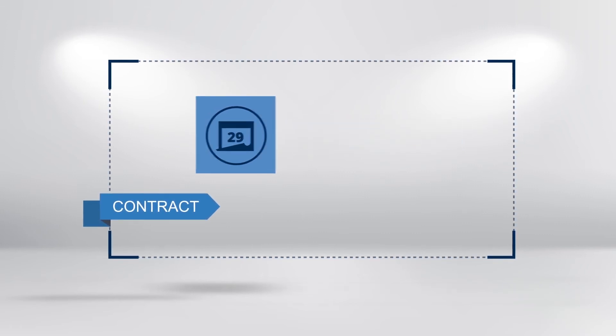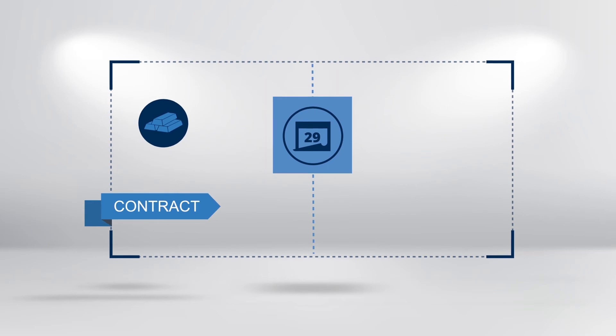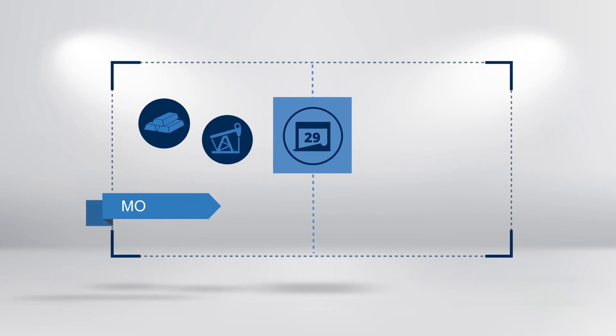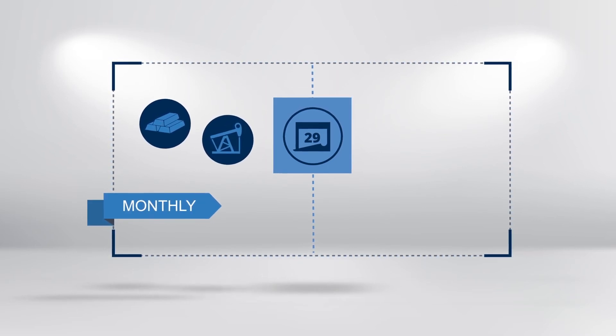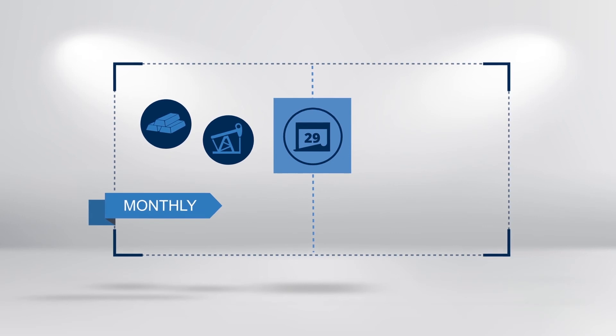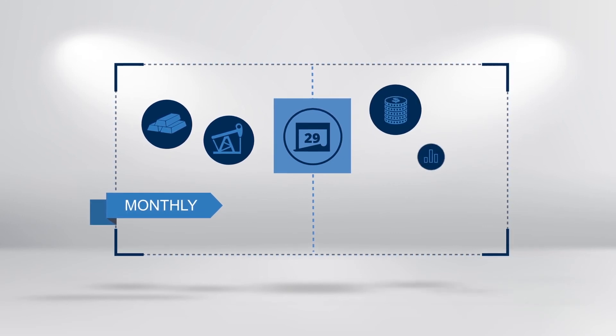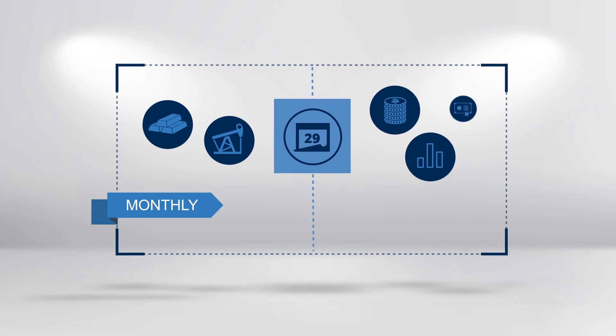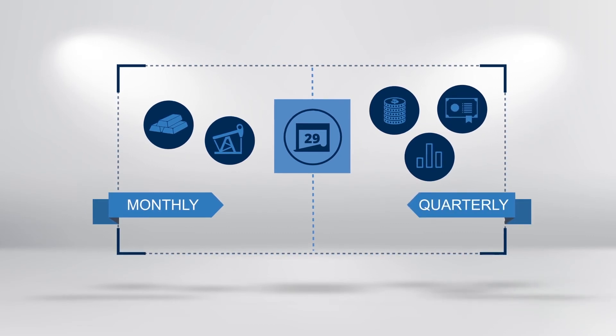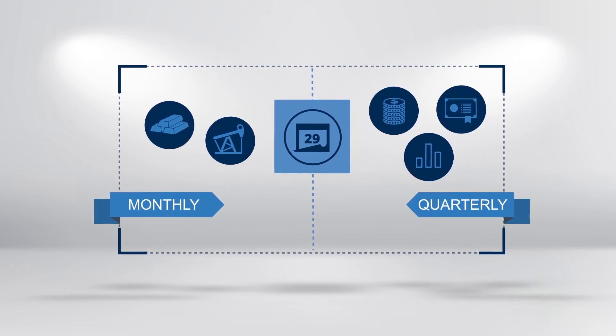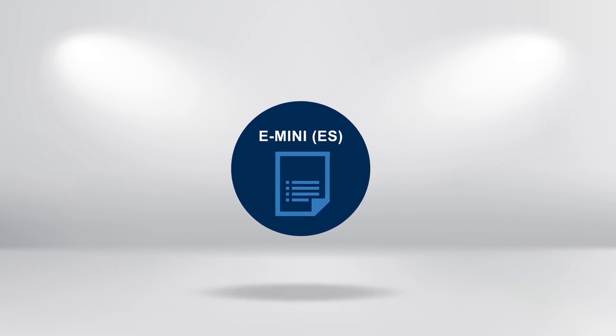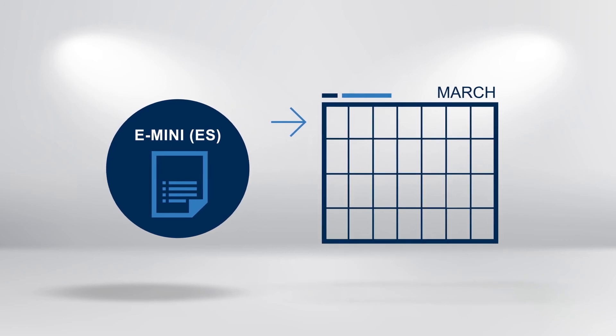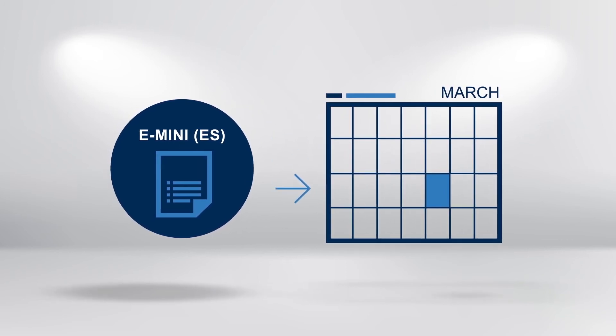Most non-financial futures contracts, such as gold and oil, have monthly expirations. Contracts on financial instruments, such as Forex, stock indices, bonds and rates, have quarterly expirations. For instance, e-mini's stock index futures, ES for March delivery, will expire on the third Friday in March. If it were for December delivery, that contract will expire on the third Friday of December.